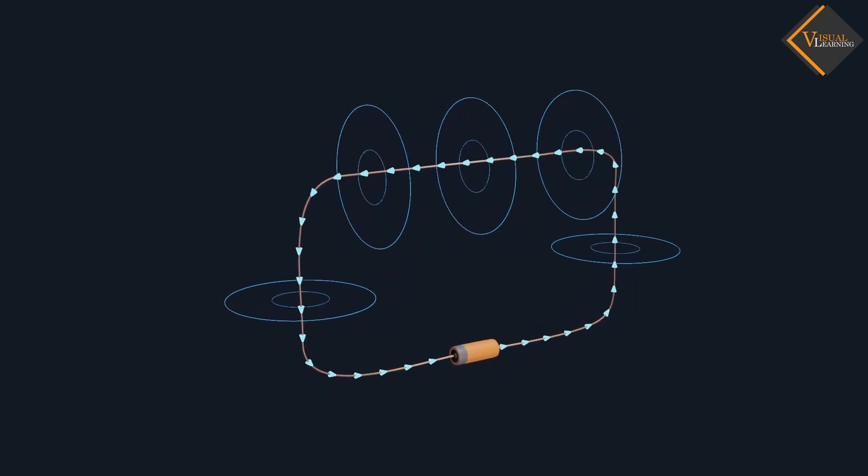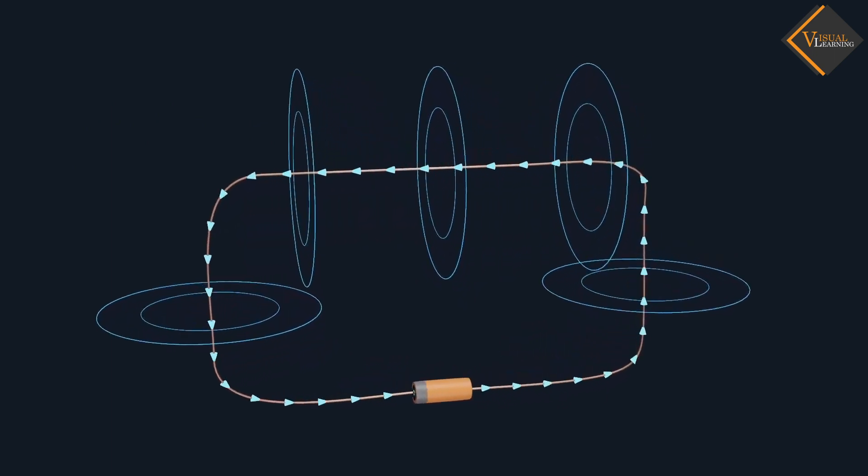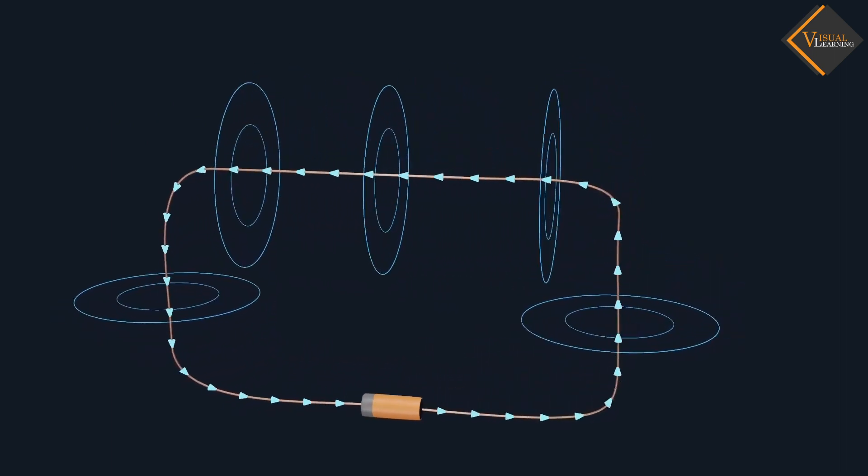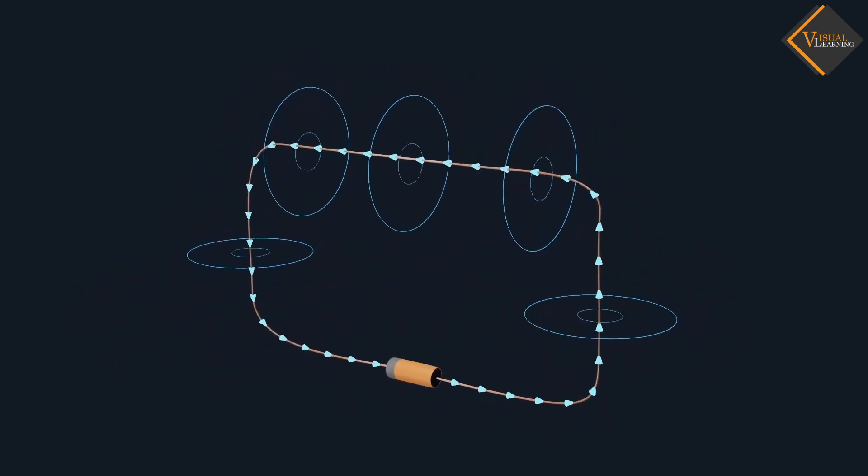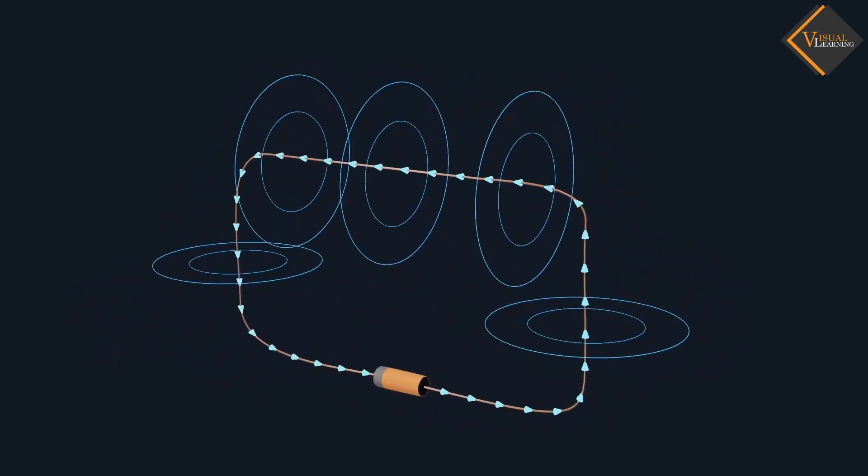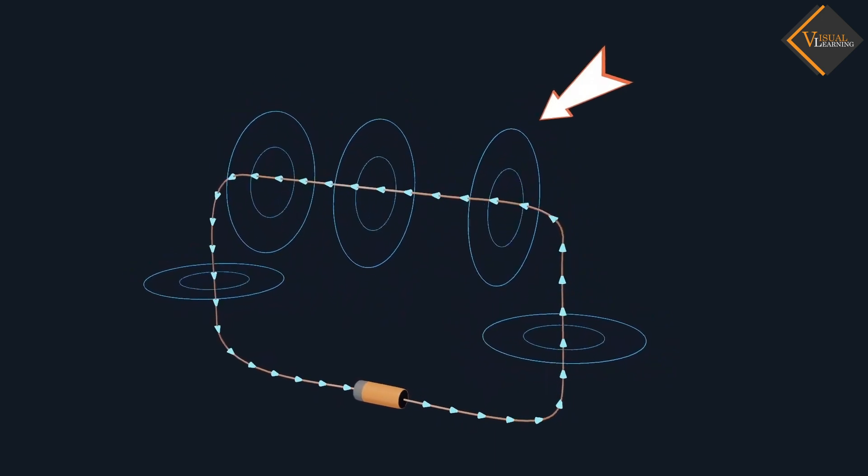We have observed the pattern of the magnetic field lines produced around a current carrying straight wire. In this pattern, magnetic field lines are in the form of concentric circles.